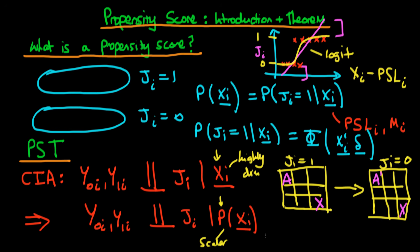What the propensity score theorem says is that it doesn't matter how highly dimensional our data is — we don't necessarily need to stratify across each of those individual covariates. All that matters is that for the treatment group, we stratify across the propensity scores of individuals, which is a function of this highly dimensional data, but importantly it is a scalar function — so we're just dealing with strata in one dimension.